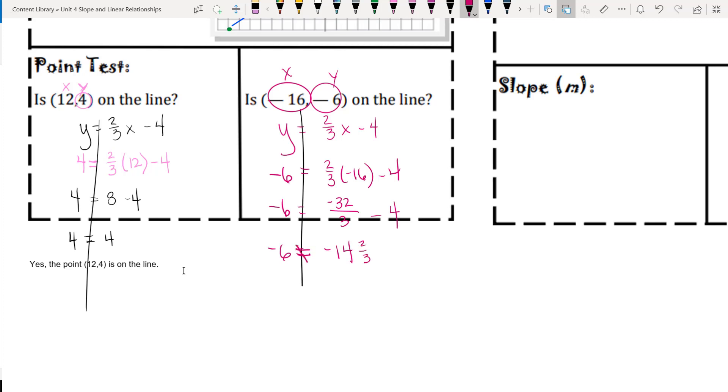Now notice here, these are not equal. Which leads us to the conclusion that, no, the point (-16, -6) is not on the line.